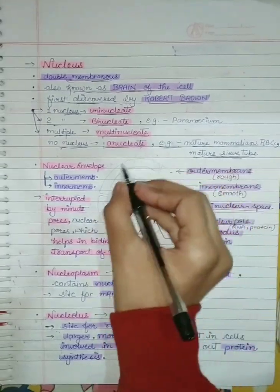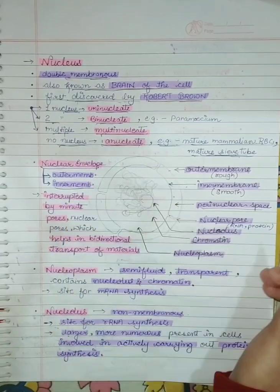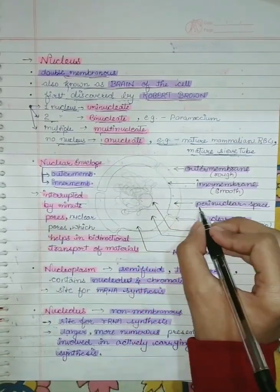This is the structure of nucleus. The outer membrane and inner membrane are comprised of nuclear envelope. The space between outer membrane and inner membrane is known as perinuclear space.